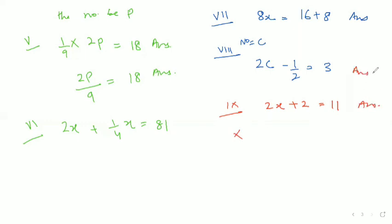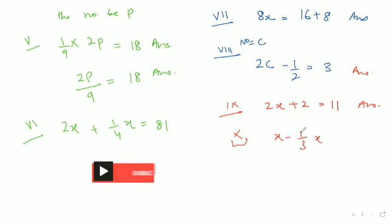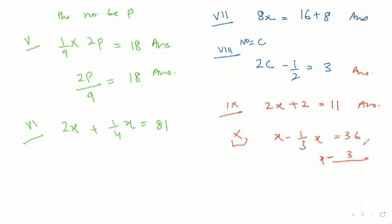Now the tenth part: the difference between a number and one third of the number is 36. Let the number be x. Difference means minus, so x minus one third of x equals 36. Our equation is x - x/3 = 36.